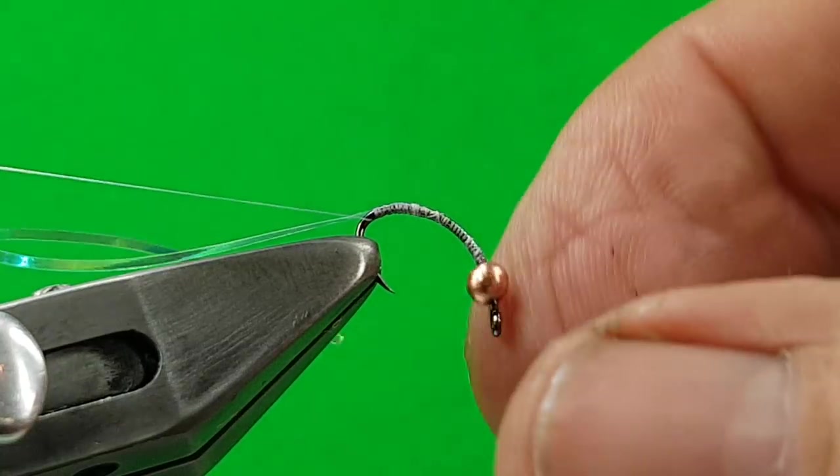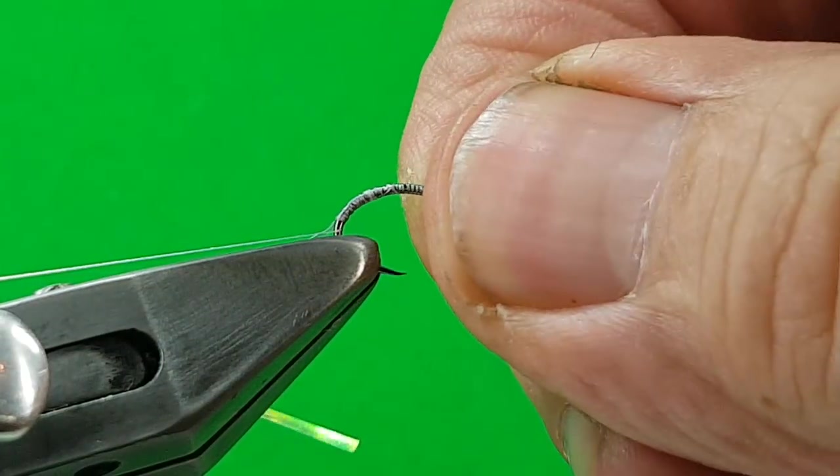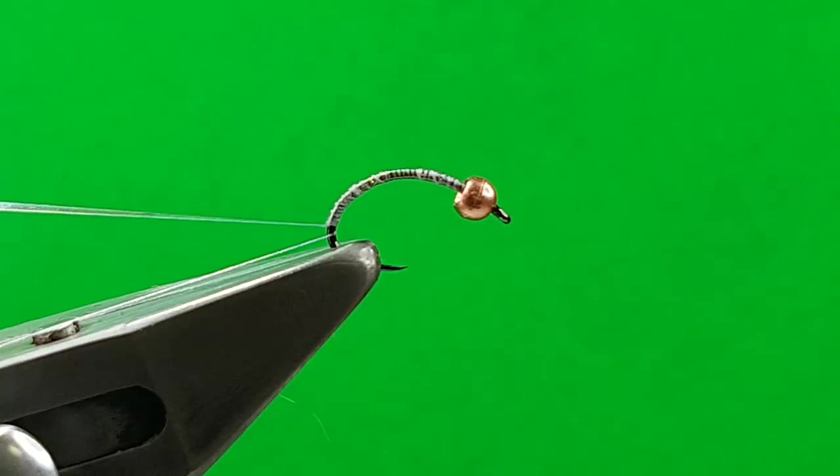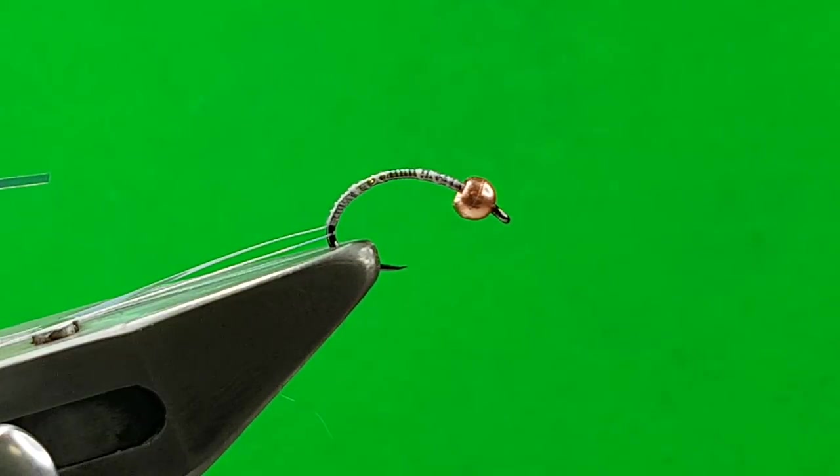So what you do is you just put that, same as the garden fly, just put that. That's going to be your rib, so you just put that thread to the back. And then you need to tie in another thread.